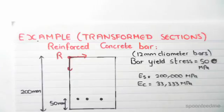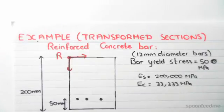The following example is one of a transformed section and it involves a reinforced concrete bar. This is a fairly complicated example, so I'll be explaining this at a slower rate than the other videos because I think it's fairly complicated.